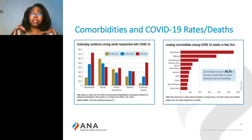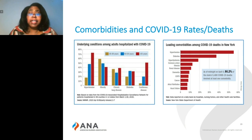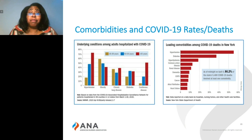What we recognize so far is that the comorbidities appear to be the most consistent indicator of severity of COVID infection and risk for death. A recent 2018 study showed that approximately 60% of residents of the United States had at least one chronic disease, 45% had at least two, and over 20% had four or more chronic diseases.